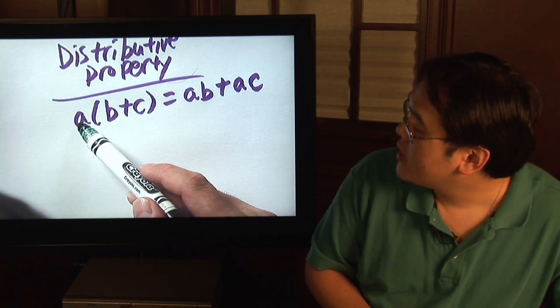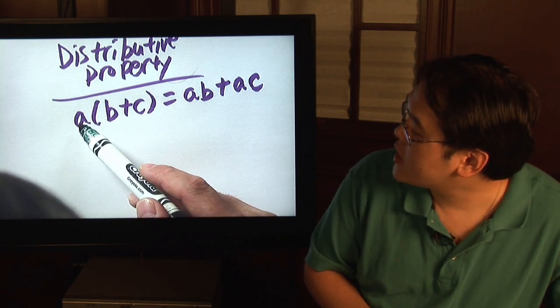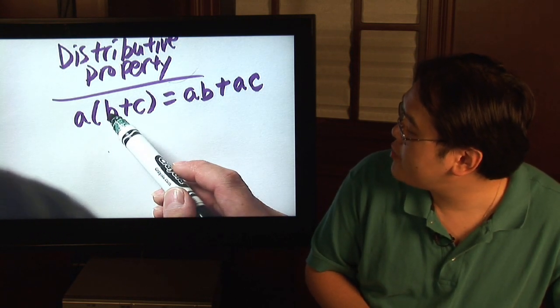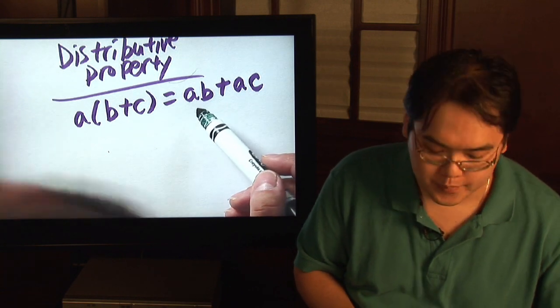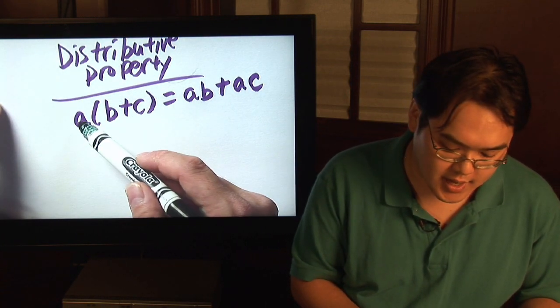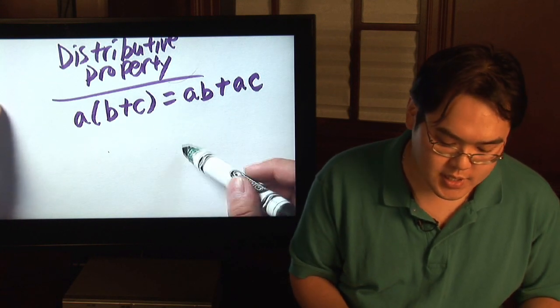So for example, you take the term on the outside and you multiply it by every term on the inside keeping the signs consistent. A times b is ab and because there's a plus sign we have a plus and then a times c is ac.